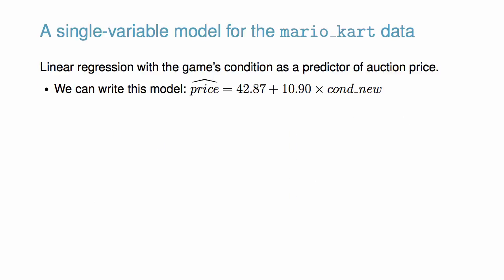First, let's fit a linear regression with the game's condition as the only predictor of auction price. We use statistical software to fit the model, which we can write as estimated price equals 42.87 plus 10.90 times cond_new.